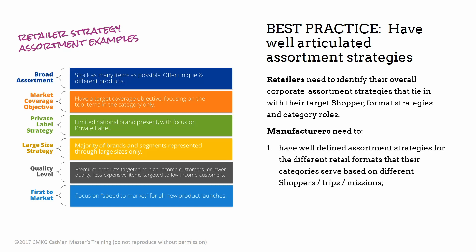Manufacturers also need strategies, and sometimes their assortment strategies are very vague or not well-defined at all. The opportunity is to have strategies across different retail formats and channels, understanding where their SKUs in different categories are most developed based on shoppers, trips, and missions.